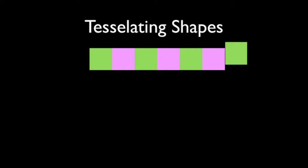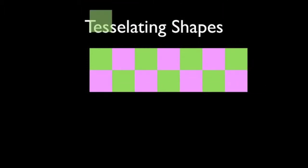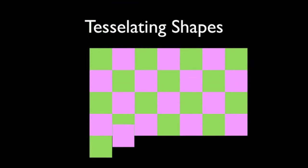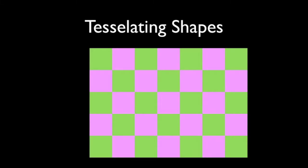Let's see if we can put lots of squares next to each other, remember with no gaps. Oh, pretty good! Would you say a square was a tessellating shape? Absolutely!